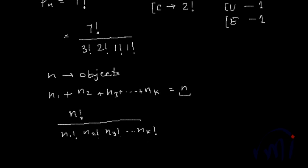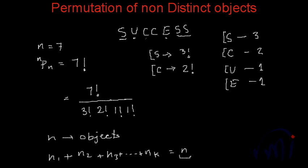This is the generalized format for calculating the number of permutations where there are non-distinct objects. So if we come back to our original example,